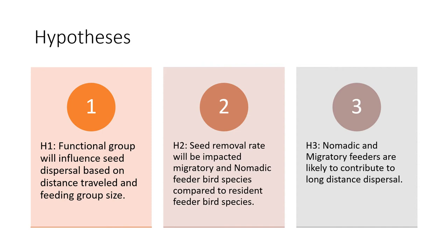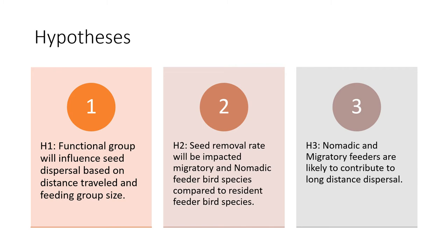As of now I have three main hypotheses for my project. The first is that functional feeding group — those three groups we just talked about — will influence seed dispersal based on distance traveled and feeding group size. I also have a hypothesis based on seed removal rate, meaning how fast the berries are plucked from the trees between September and March. And a third hypothesis based on how different feeding groups contribute to long-distance dispersal.